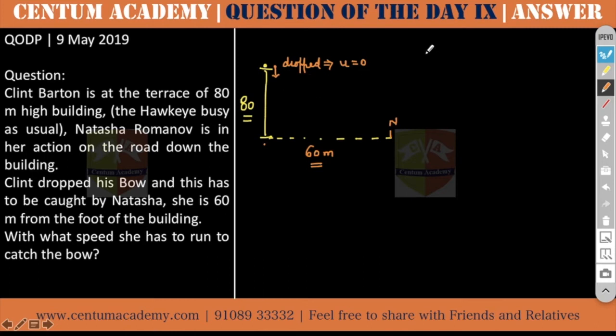Based on the vertical motion, can't I say that s is equal to ut plus half at squared? Because falling down, I am taking a as 10. Generally for the calculation purposes, t squared. This is 80 and this is 5.